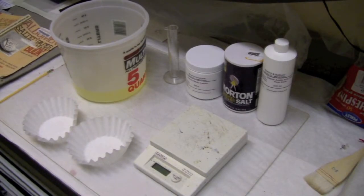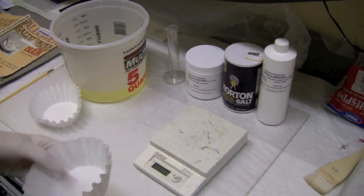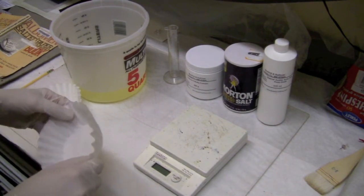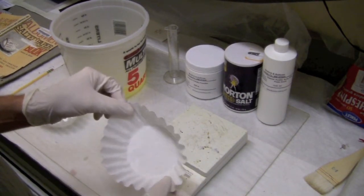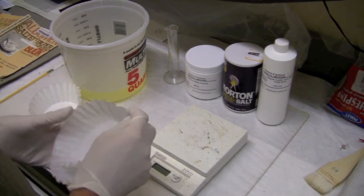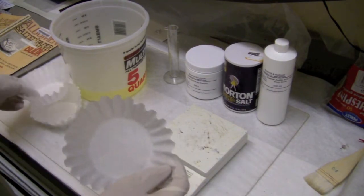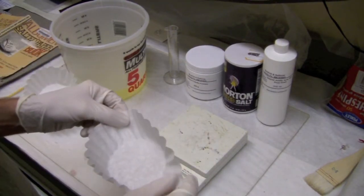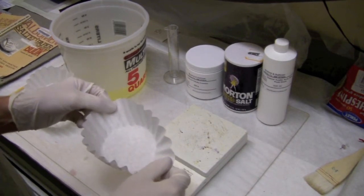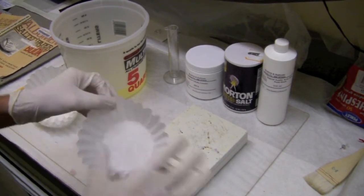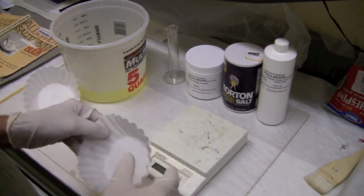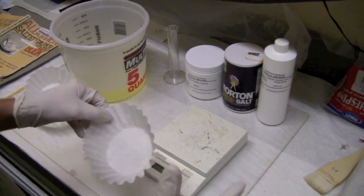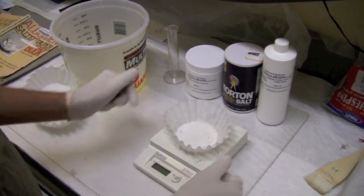We're going to get started with our powder chemicals. In order to use the scale, we're going to use a coffee filter as a means of containing the chemicals, keeping them from spilling, and protecting the surface so we don't contaminate and mix the chemicals with other chemicals. Place that on there first.